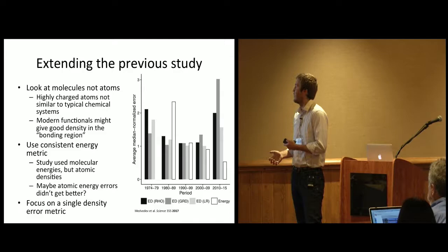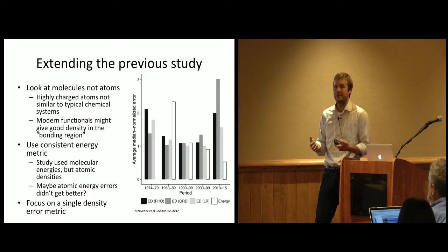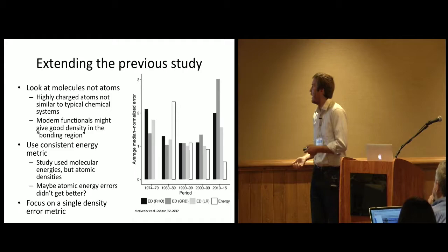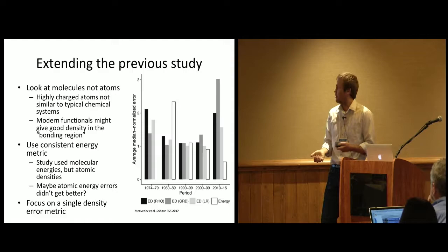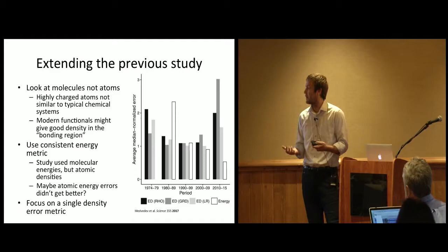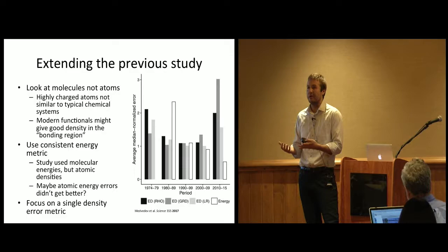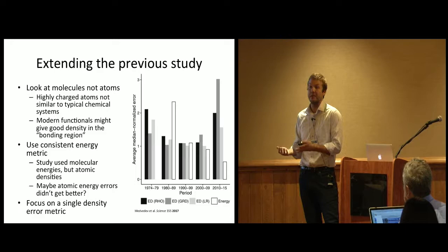Quantum chemistry really doesn't do a great job, no matter what, of getting the densities in these core regions, but when we do energy differences, we just subtract out those errors. Really the errors in quantum chemistry calculations come from the valence region or the bonding region, so regions far from the nuclei. This wasn't the region of space that they were looking at in this study. We want to look at molecules and not atoms with the idea that maybe these modern functionals that give good energies are giving good energies because they're giving good densities in these chemically relevant regions of space. The other thing we want to do is use a consistent energy metric. The study used the molecular energies from that graph I showed about three slides ago, but it looked at atomic densities. So it's possible that the modern functionals don't really give a good density for these atomic systems, so they weren't comparing apples to apples.